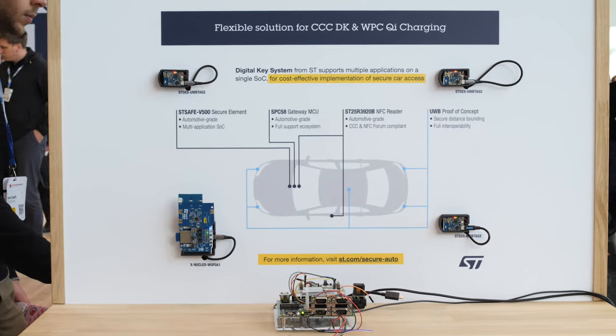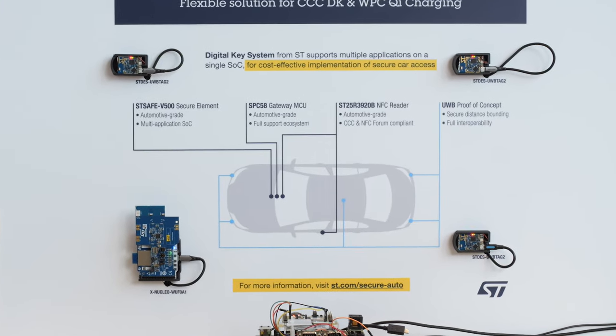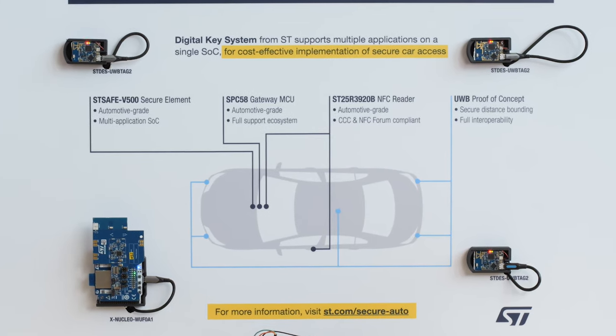The ST Secure V500 is located inside the vehicle software console and connected via a standard SPI interface to the vehicle ECU. I'm going to show you how we can access the car with a mobile phone that is already loaded with a digital key applet, as well as the credentials and certificates for pairing.